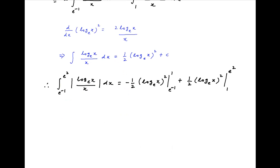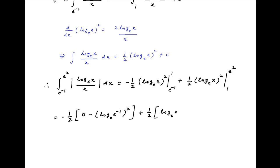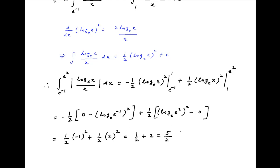Putting in the limits, we get minus half times ln 1 whole square minus ln of e raised to the power minus 1 whole square, plus the second term which is half times ln of e square whole square minus ln 1 square. This simplifies to half of minus 1 squared plus half of 2 squared, which is equal to half plus 2, or 5 upon 2, which is the required answer.